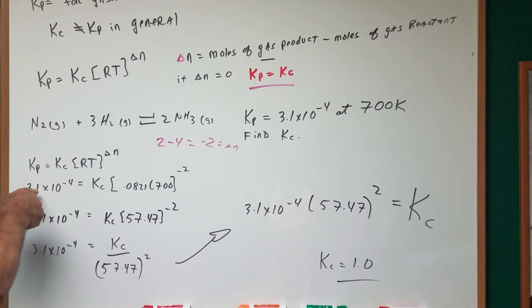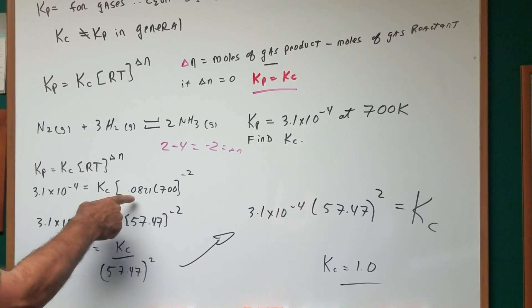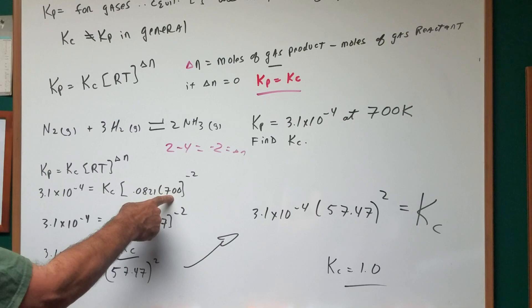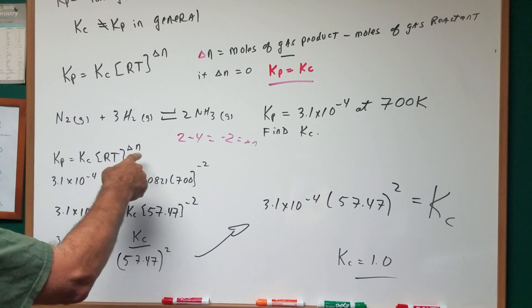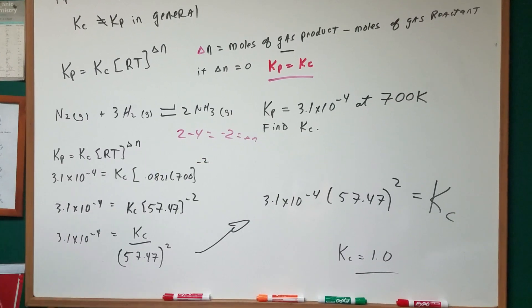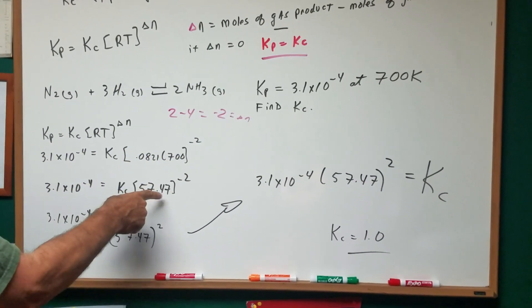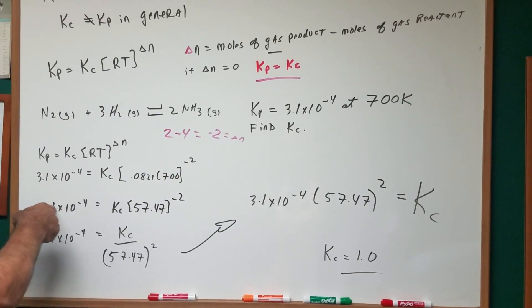So keep that in mind. Plug in. We know the KP is 3.1 times 10 to the minus four. We don't know the KC. There's the R, which is the universal gas constant. There's the temperature in Kelvin minus N, or the delta N is equal to minus two. So putting it together, we multiply this out. We get 57.47 to the negative second power times the KC.